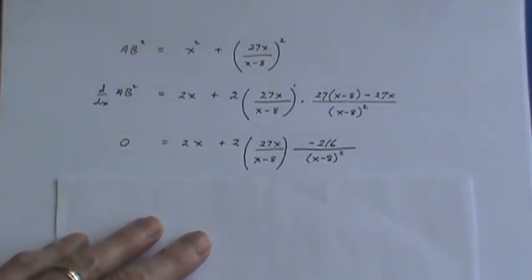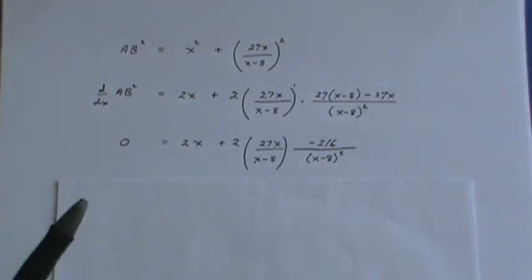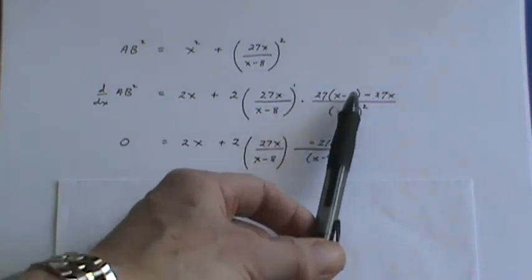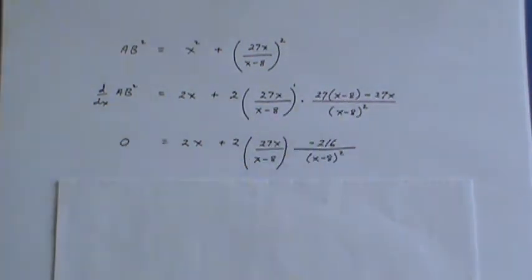I put my derivative of ab squared equal to 0. So this numerator I get 27x minus 27x so all I get is the constant on top.